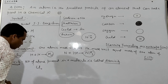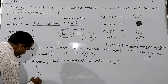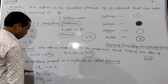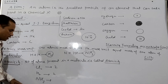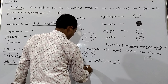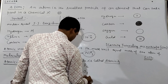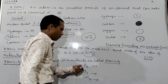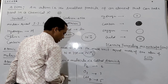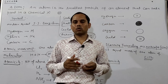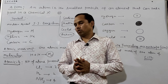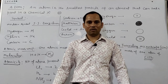Examples of atomicity: Cl2 — atomicity 2; H2 — atomicity 2; NH3 — atomicity 4. Similarly, P4 — atomicity 4; ozone (O3) — atomicity 3; CH4 — atomicity 5. However many atoms combine to form a molecule, that is the atomicity. If you have any doubts, you can write in the comment box. Thank you, Jai Hind, Jai Bharat.